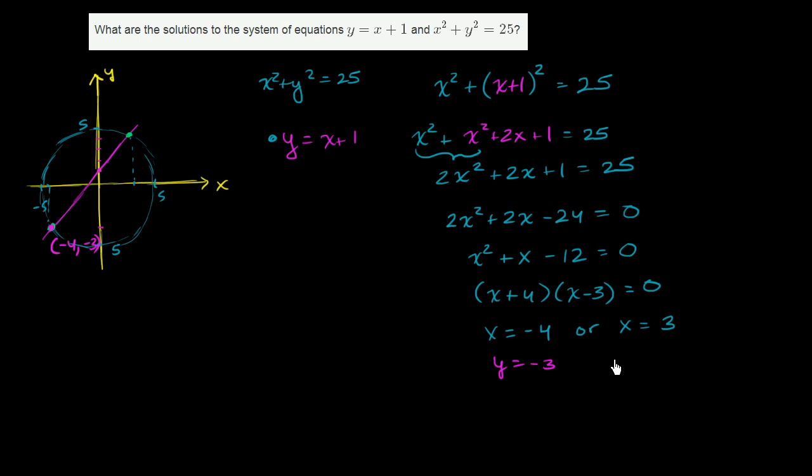Likewise, when x is 3, y is going to be equal to 4. So this is the point 3 comma 4. These are the two solutions to this nonlinear system of equations.